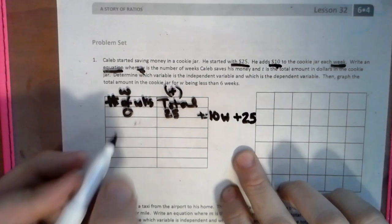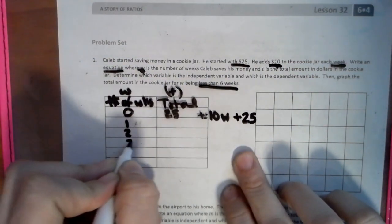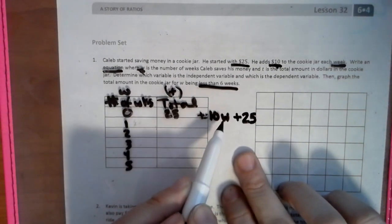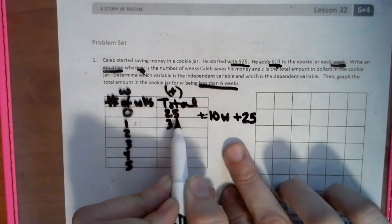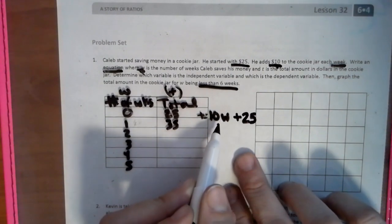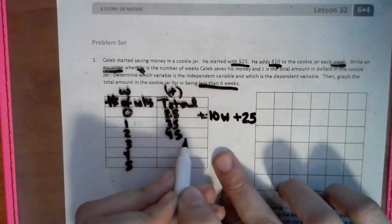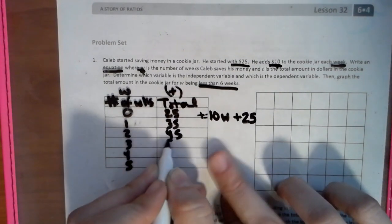So we have to be less than six weeks. So one, two, three, four, five. Now we're going to take this one and insert it here. So we're going to have 10 times one, which is 10, plus 25, which is 35. We put a two in there. Two times 10 is 20, 20 plus 25 is 45. We can see the pattern here as we're jumping by tens. So three times 10 is 30, plus that is 55.